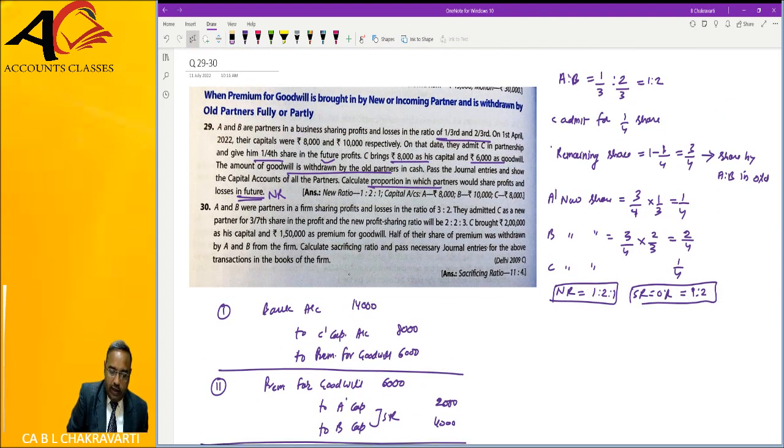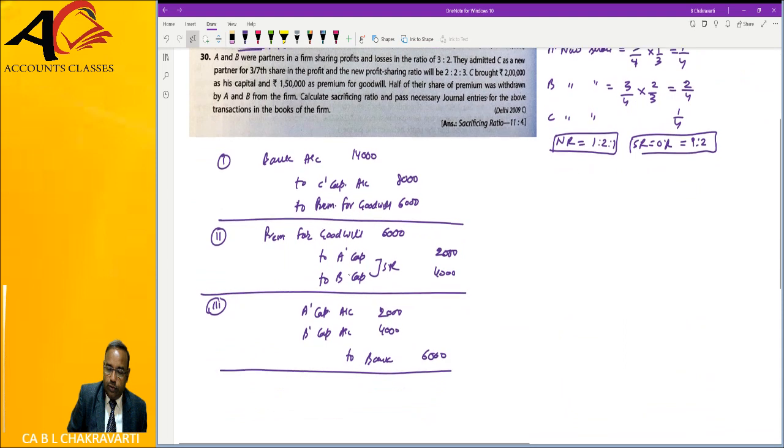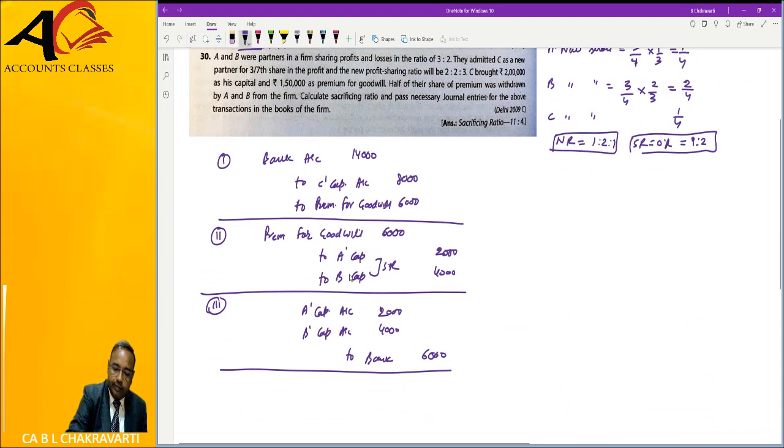Question number 29. Now, let's see. A and B, the ratio is 3 to 2. New ratio of 2 is to 2 is to 3. C brings 2 lakh capital and 1 lakh goodwill. Half, that is the withdrawal.